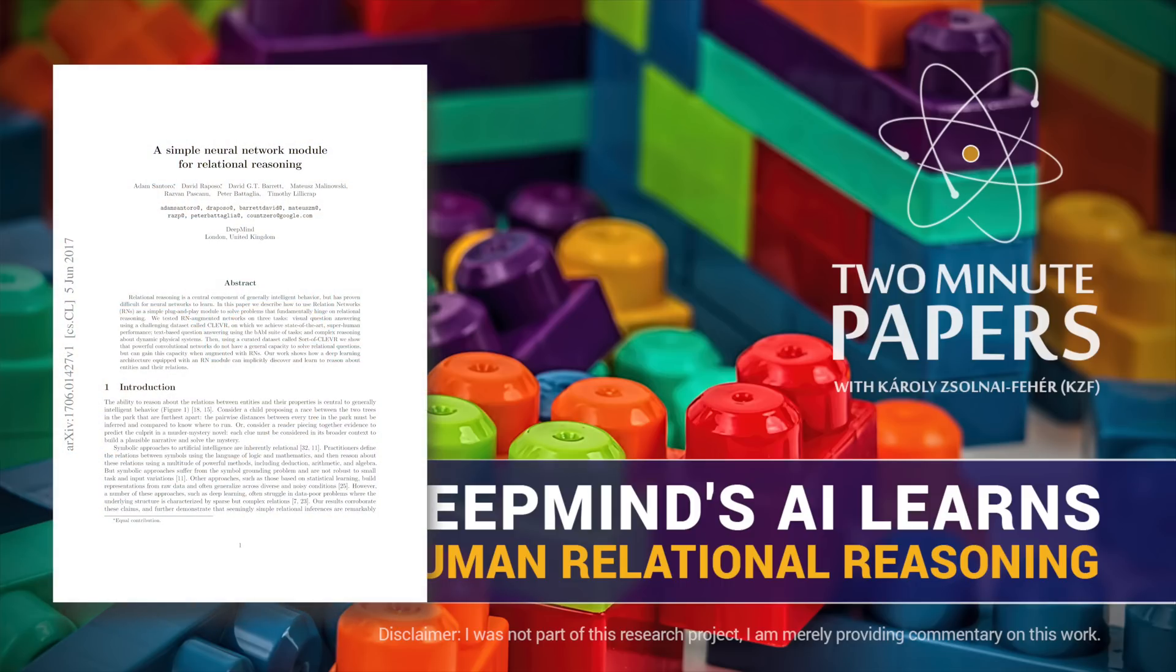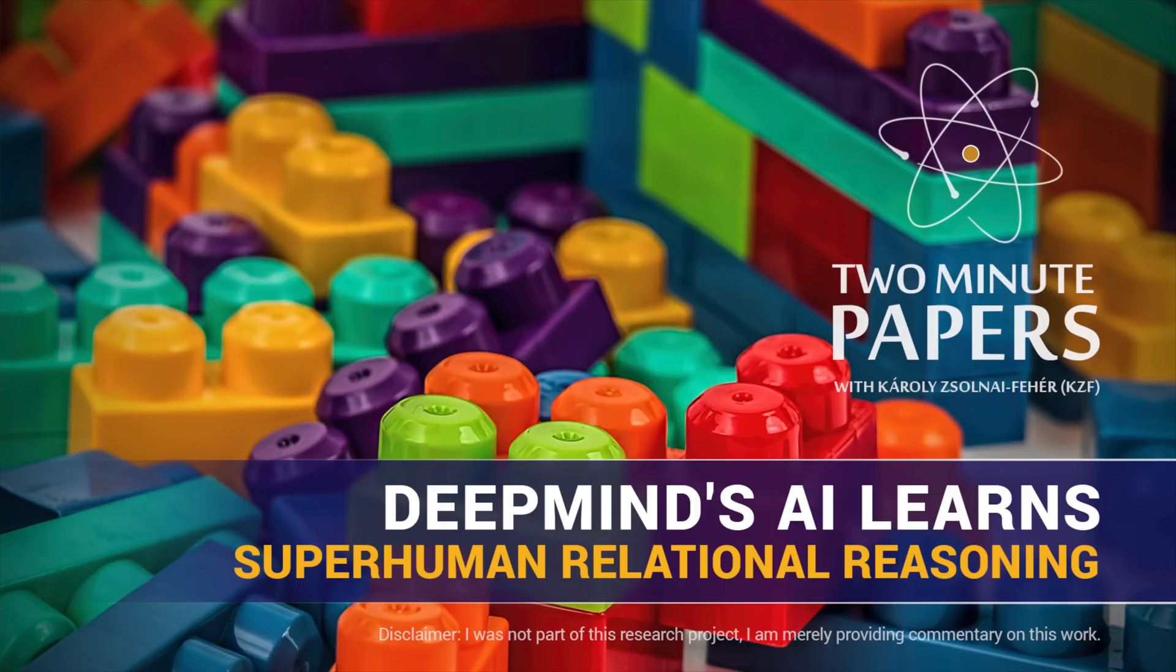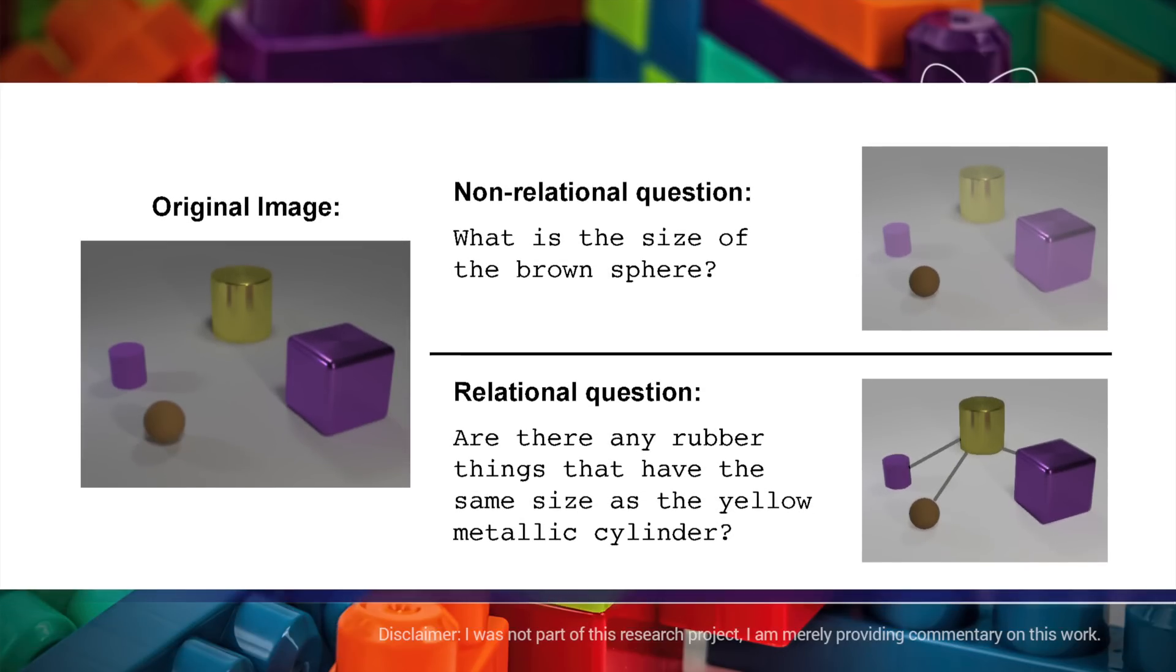Dear Fellow Scholars, this is Two Minute Papers with Károly Zsolnai-Fehér. This paper is from the Google DeepMind guys and is about teaching neural networks to be capable of relational reasoning.